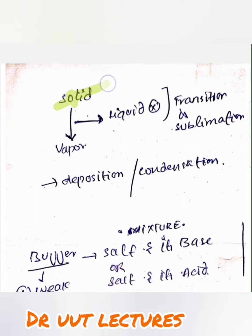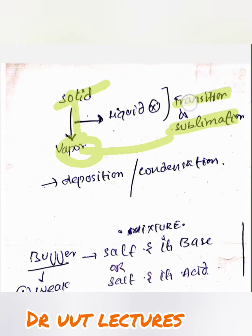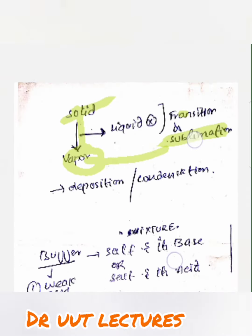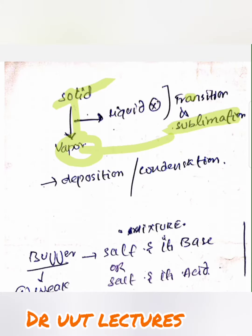When a solid is heated, it converts into vapors — this is called sublimation. This transition or conversion is called sublimation. In short, when a solid is converted into vapors and there is no liquid phase observed during this conversion or transition, that is called sublimation.